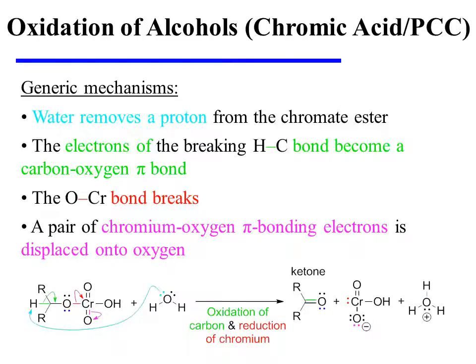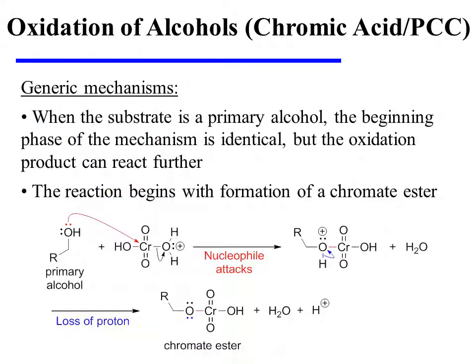In this instance, a secondary alcohol was used as the reactant, so a ketone is the product. When the substrate is a primary alcohol, the beginning phase of the mechanism is identical, but the oxidation product can react further.